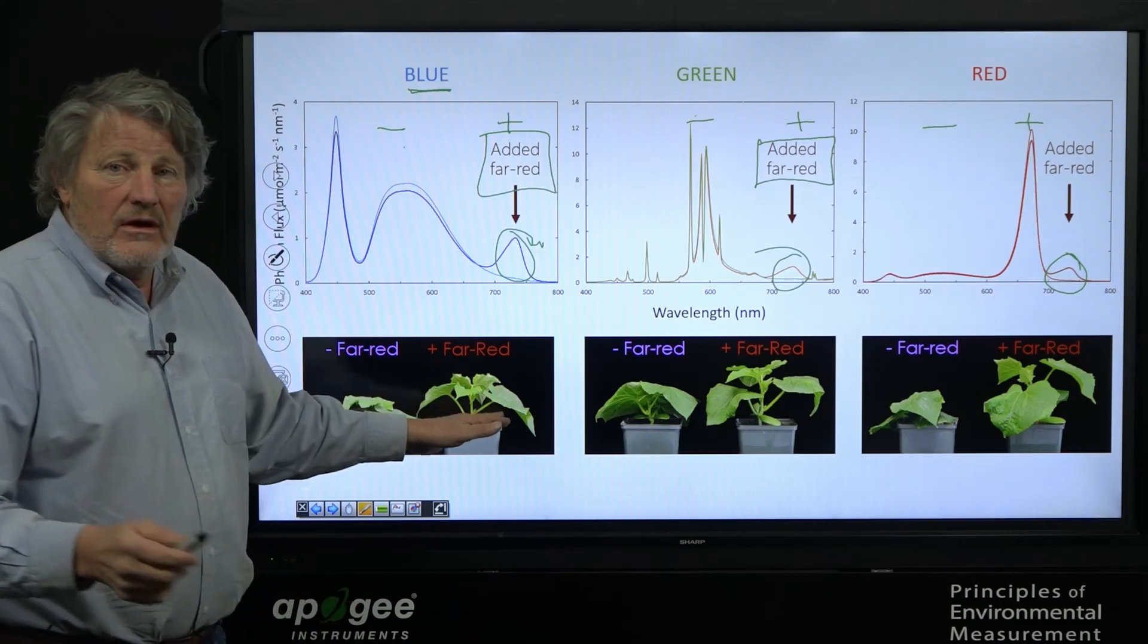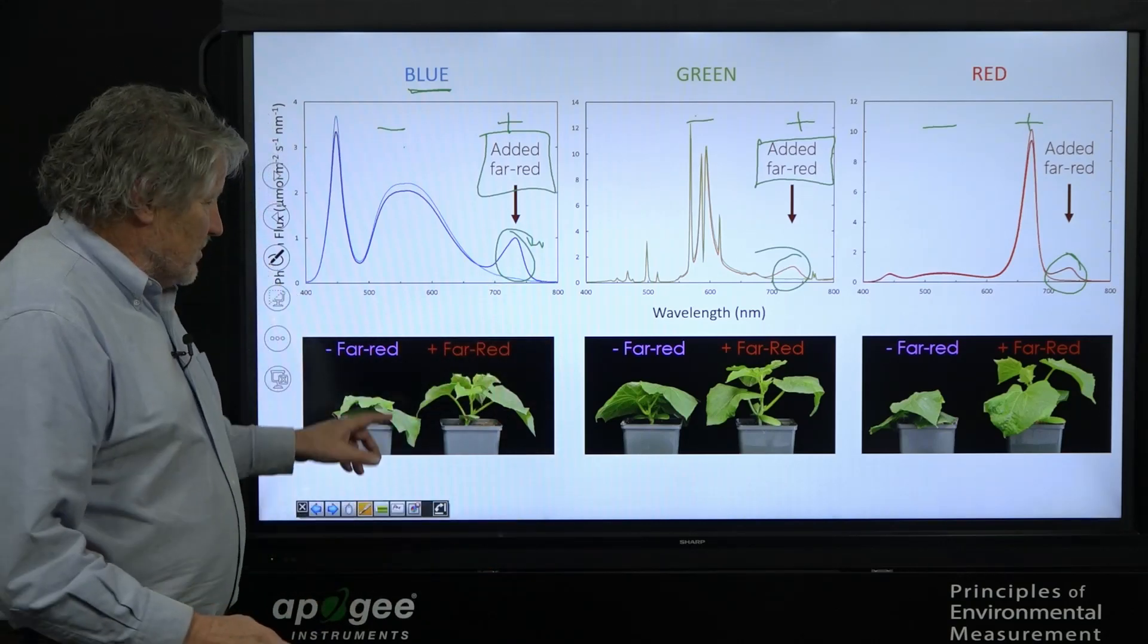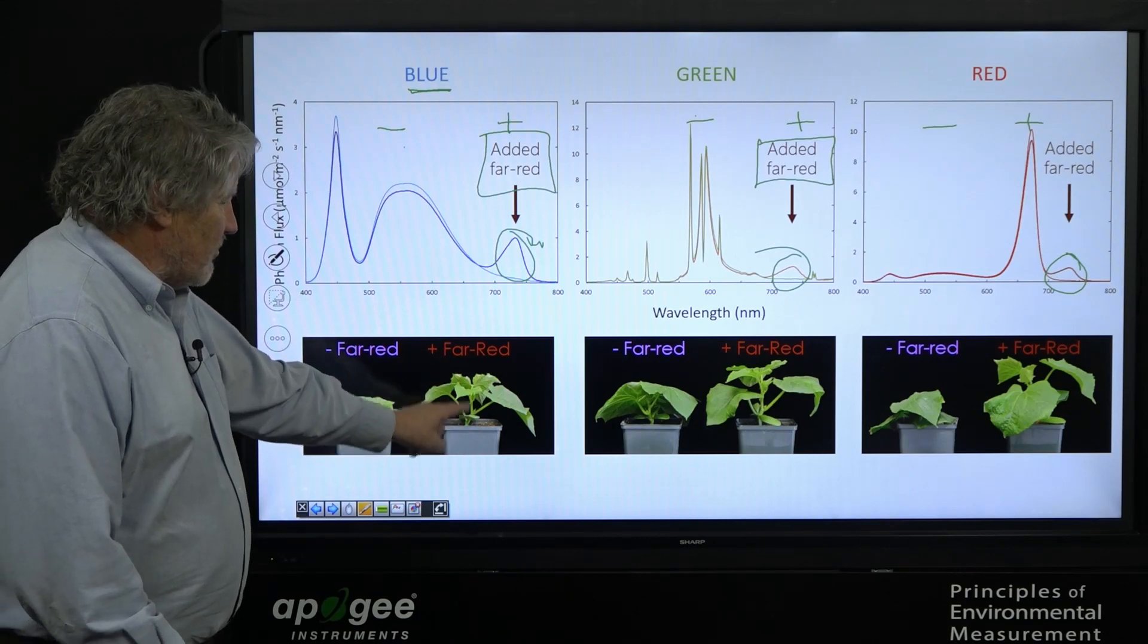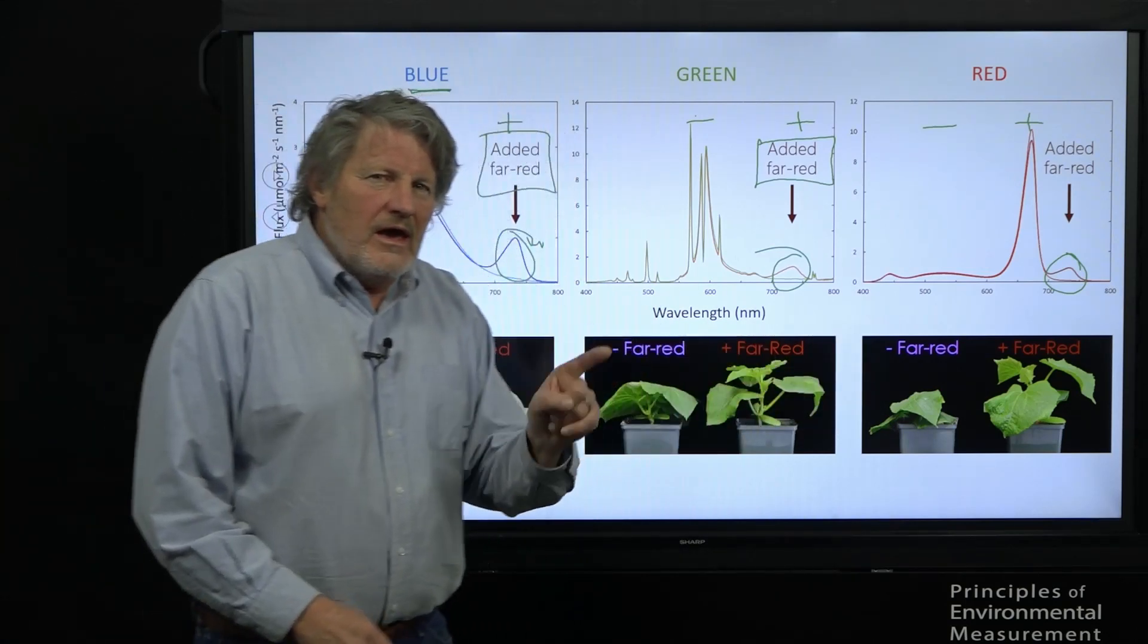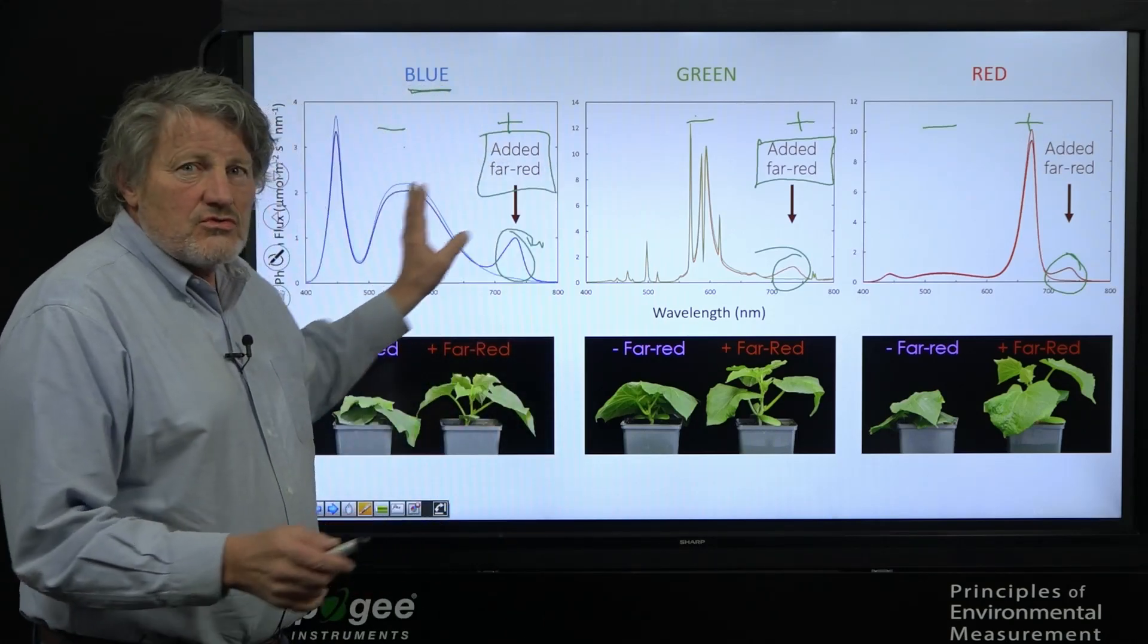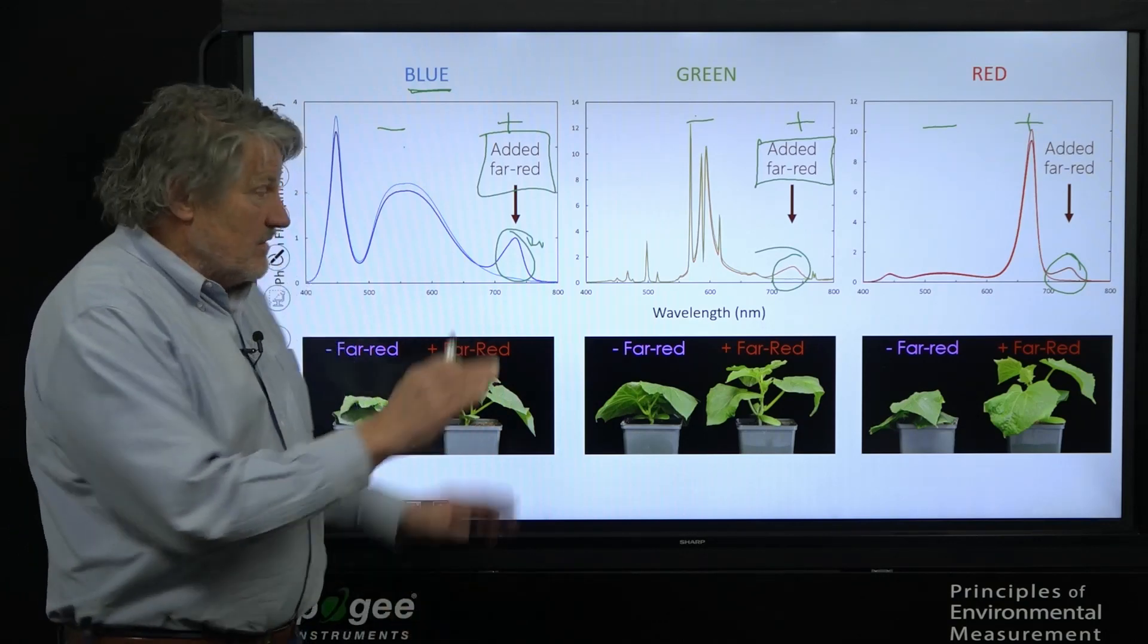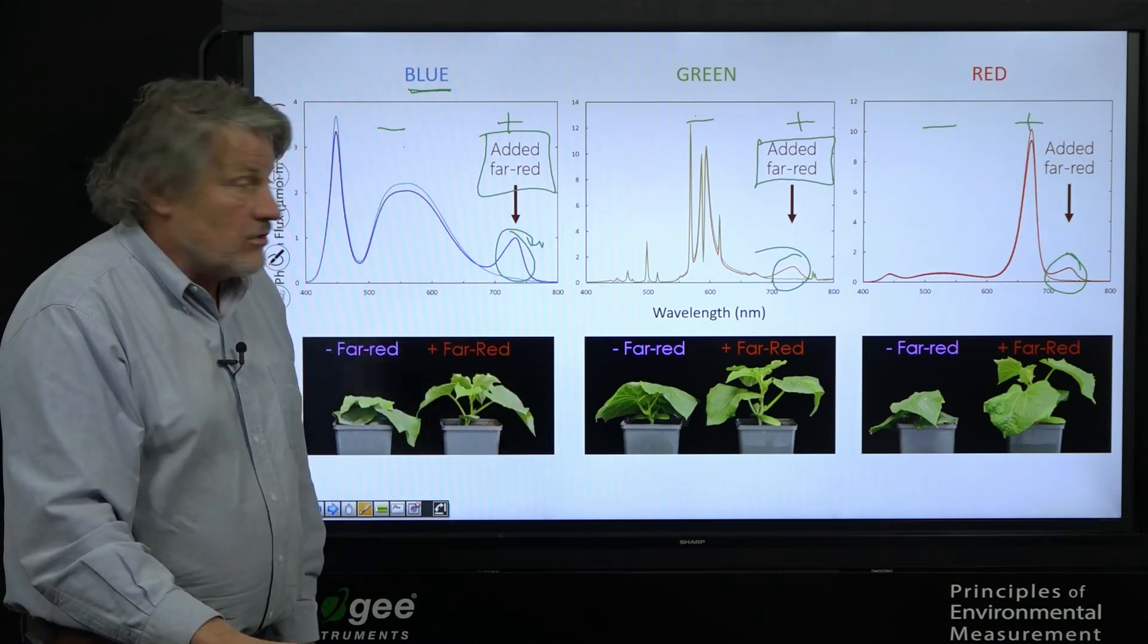Here's the plants. Not surprisingly, we've now done this with multiple species. But the most reproducible and the most sensitive is cucumbers. Not surprisingly, when we add far red, it gets taller. Here they are, taller. Now, can we predict stem elongation in all of these treatments with phytochrome photo-equilibrium measurements? If that works, it will explain all of these treatments. Let's take a look at the data.